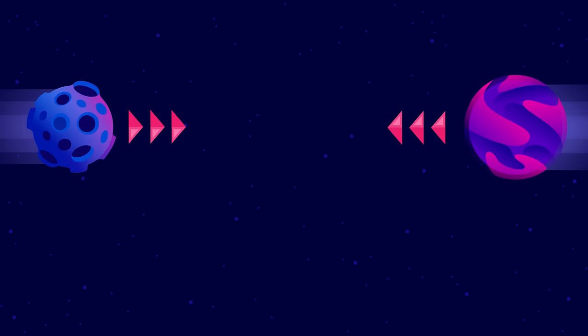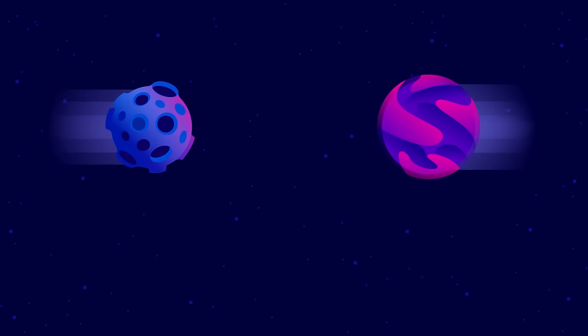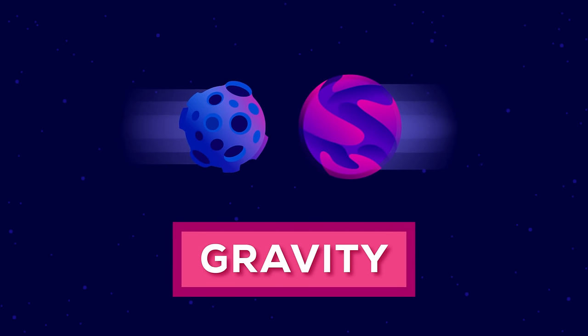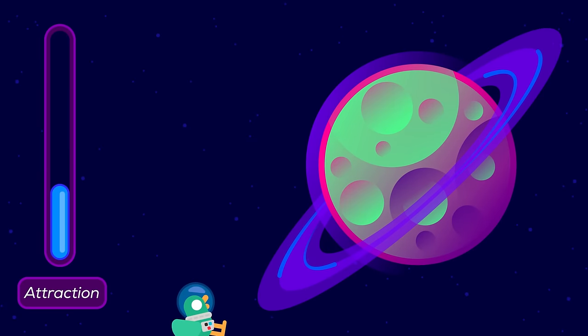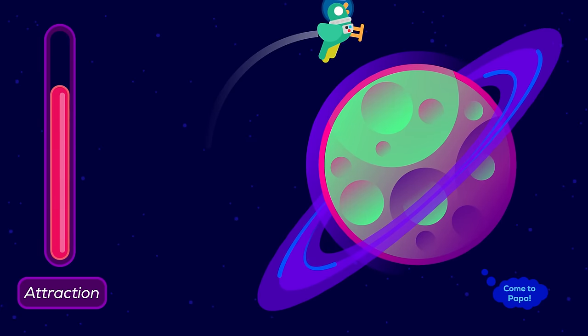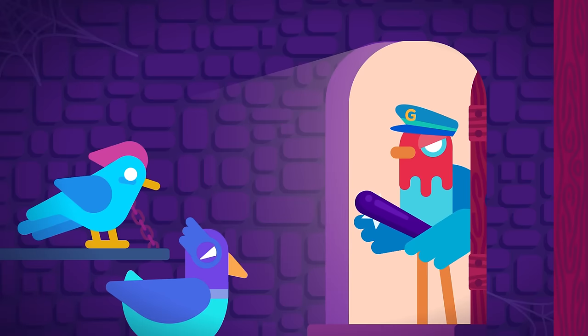Everything with mass in the universe attracts every other thing with mass. We call this phenomenon gravity. The closer you are to a big chunk of mass, the stronger the attraction or the more you're pulled in. This effect traps us on Earth.